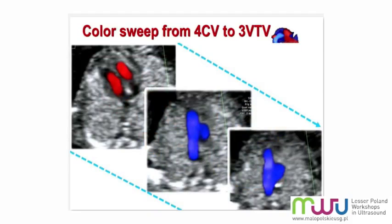We looked at the four-chamber view in color at the stripes of inflow — whether there were one or two. We checked the division to see if there is a separation between them and we also checked the size ratio. At the level of the three-vessel and trachea view, we checked the arms, whether there are two arms, whether the size ratio is similar, and also the direction of flow.